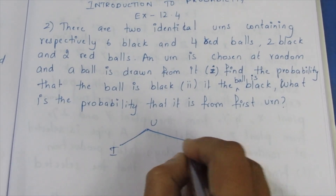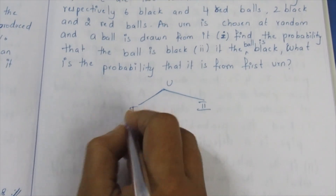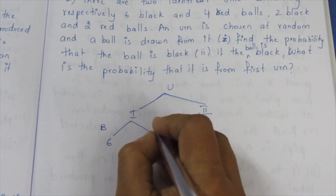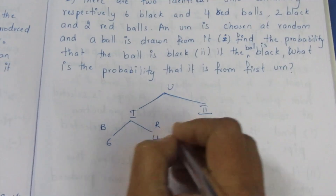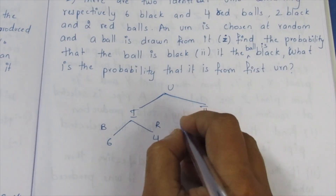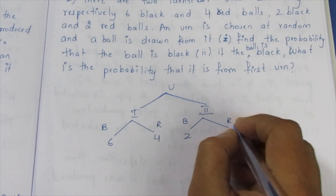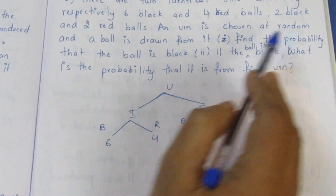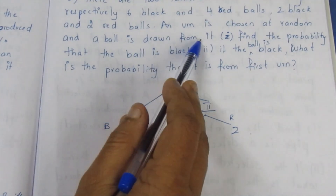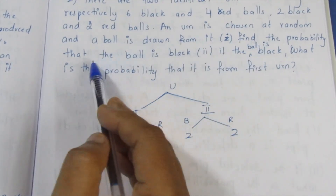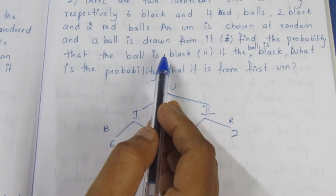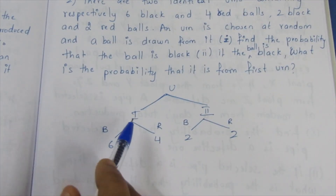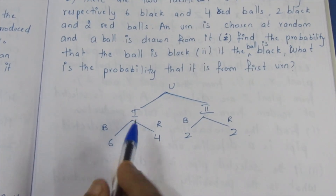So we have Urn 1 and Urn 2. Urn 1 has 6 black and 4 red balls. Urn 2 has 2 black and 2 red balls. An urn is chosen at random and a ball is drawn from it. The first part asks: find the probability that the ball is black.